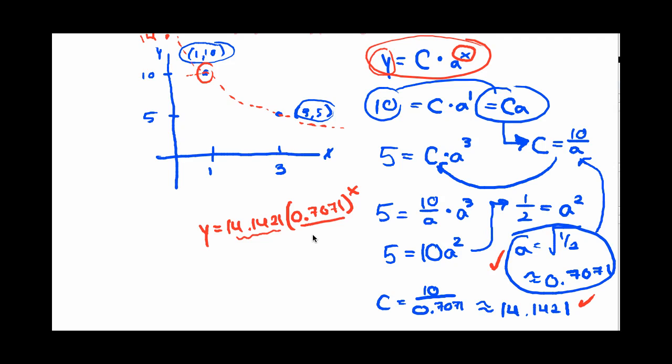So this is sensible, this makes sense from a graphical perspective. The key point in each of these examples is to set up your framework, first of all, for an exponential function. Don't try to set something up for a linear function. And then use the data points that you're given to determine the values of C and a using algebra. Good luck.